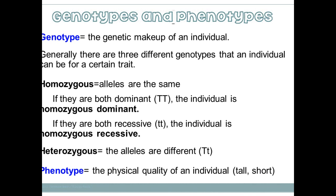Or an individual can be heterozygous, where the alleles are different — one capital letter and one lowercase letter. Then there's phenotype, which is how the gene is expressed — whether you have blue or brown eyes, brown or blonde hair, whether you're tall or short. Phenotype is the physical appearance.